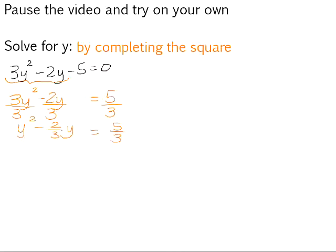Now we need to figure out what term we must add in in order to complete the square. So it's the coefficient of the linear term, of the middle term, divided by 2, which is the same as multiplied by a half, and squared.